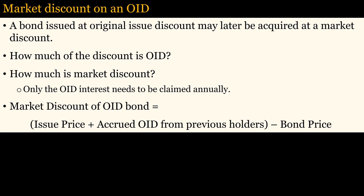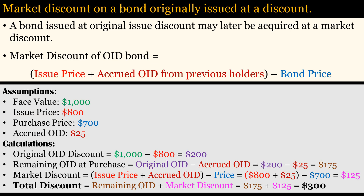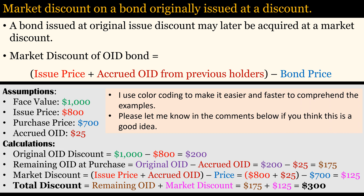Original issued discount bonds may also drop in price because of lower demand, so they will have both an OID discount and a market discount. The OID is treated under the usual rules, but the market discount is increased by accrued OID. The market discount of an OID bond equals the issue price plus the accrued OID includable in the gross income of all prior holders of the bond minus the bond price. You need to know how much of the discount is OID and how much is market discount so that you know how much interest to claim each year. Only the OID interest needs to be claimed annually. In this example, an OID bond with a face value of $1,000 and an issue price of $800 is purchased for $700, a total discount of $300. We assume the bond has accrued OID equal to $25 at the time of purchase, which increases the market discount by the same amount. Note that the original OID is reduced by the $25 accrued OID, yielding $175 for remaining OID. Adding the $125 market discount equals the $300 total discount price. Freeze the screen if you would like to study this in more detail.